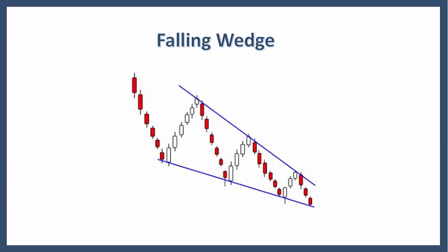What makes this different than a symmetrical triangle? The symmetrical triangle has no definitive slope and no bias. But the falling wedge definitely slopes down and has a bullish bias. However, this bullish bias cannot be realized until a resistance breakout.